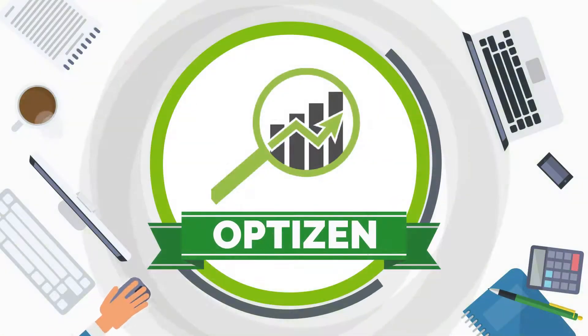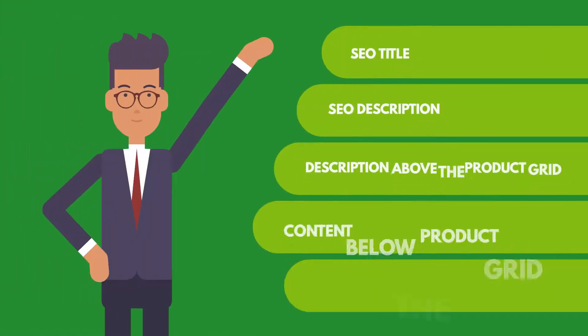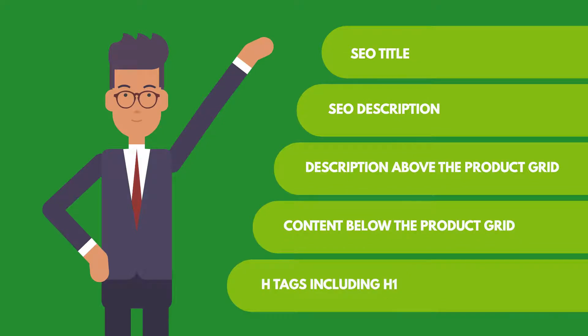Optizen allows you to optimize your tag pages with SEO title, SEO description, description above the product grid, content below the product grid, and H-tags including H1, quickly and easily.